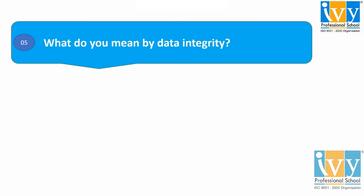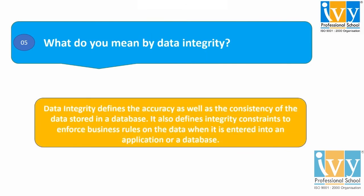Moving to the last and fifth question: what do you mean by data integrity? Data integrity defines the accuracy as well as the consistency of the data stored in a database. Data integrity is used to maintain accuracy and consistency of data in a table. It also defines integrity constraints to enforce business rules on the data when it is entered into an application or a database. We can implement this by using constraints.